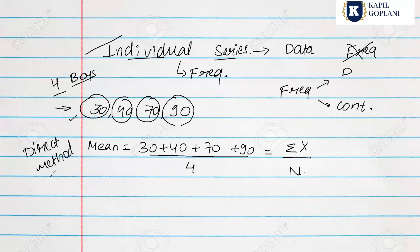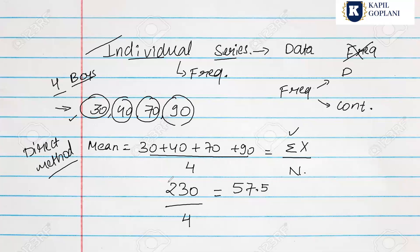Using the direct method, the sum of observations divided by N gives us the mean. For our data (30, 40, 70, 90) divided by 4, the answer comes out to 57.5.